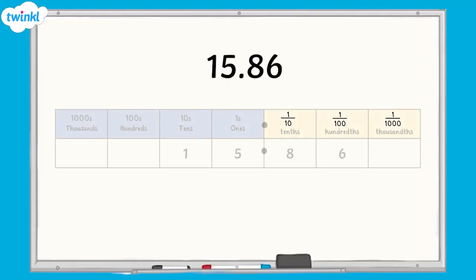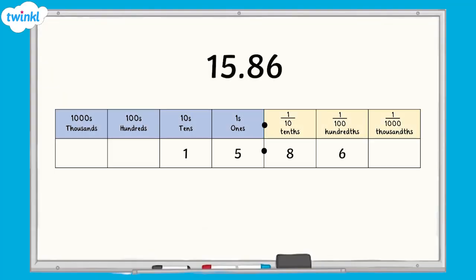The place value of a digit tells us how much that digit is worth in that number. So in 15.86, the 1 has a value of 1 ten, the 5 has a value of 5 ones, the 8 has a value of 8 tenths, and the 6 has a value of 6 hundredths.